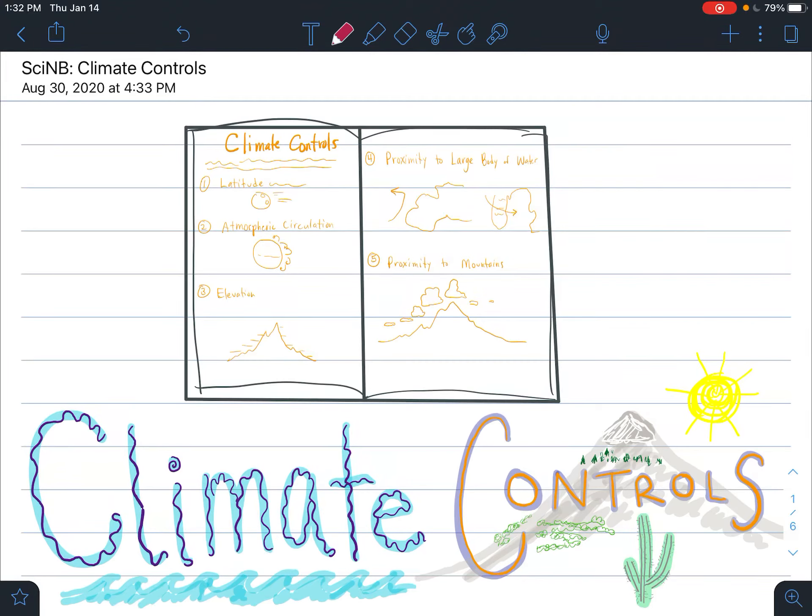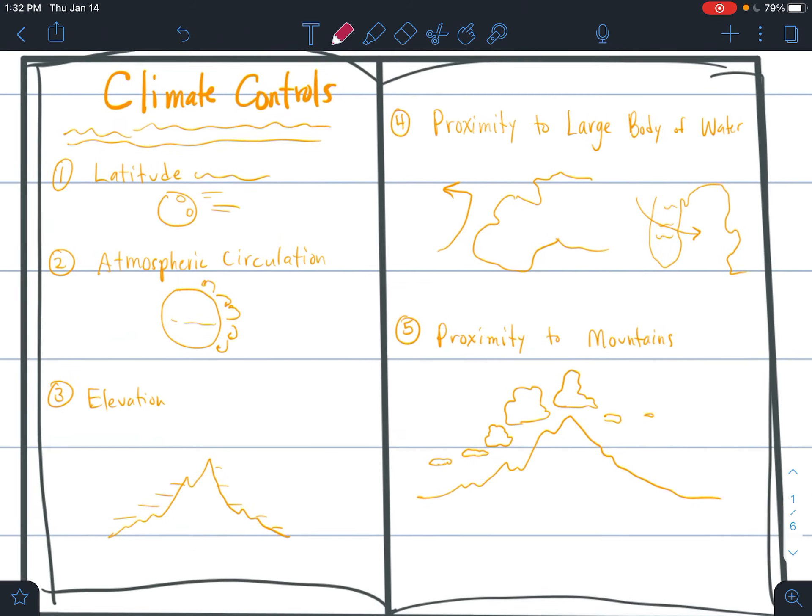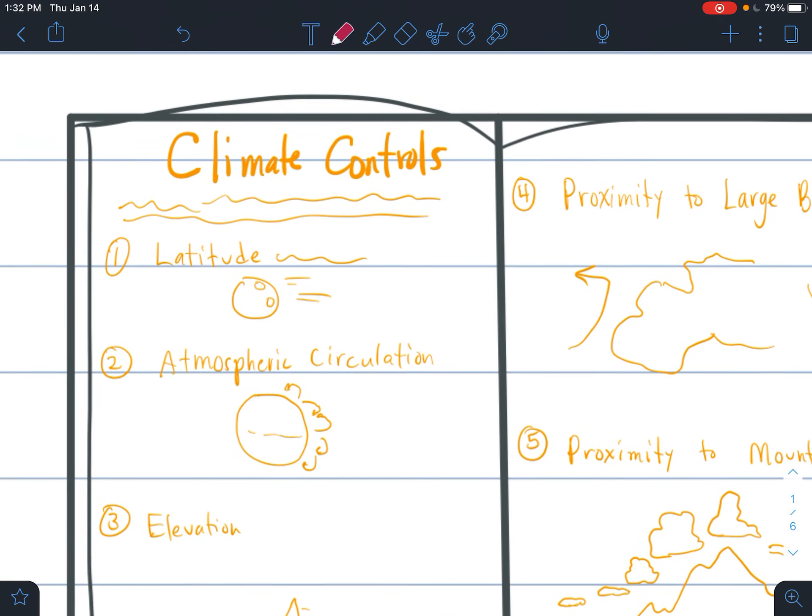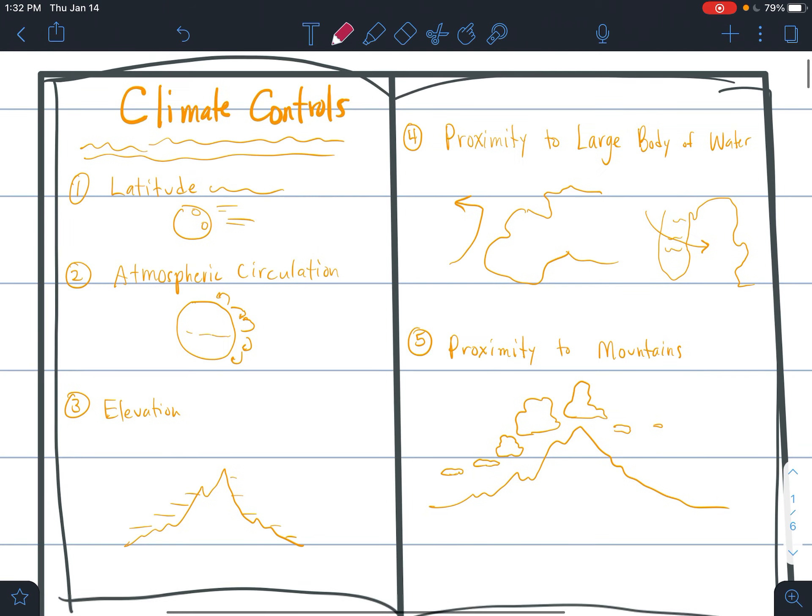Yo, what's up, SciFam? It's Nickel, and today we're going to look at things that control the climate. There's really five different factors that we're going to consider looking at that are things that can cause regional climates to be impacted.